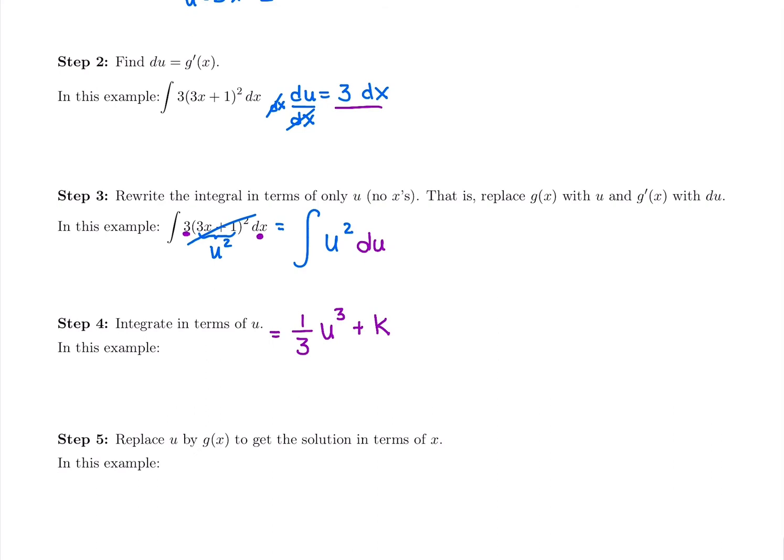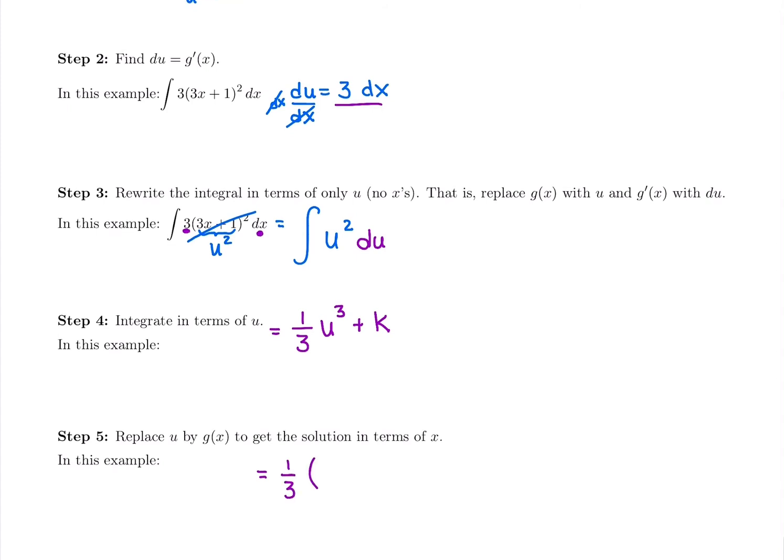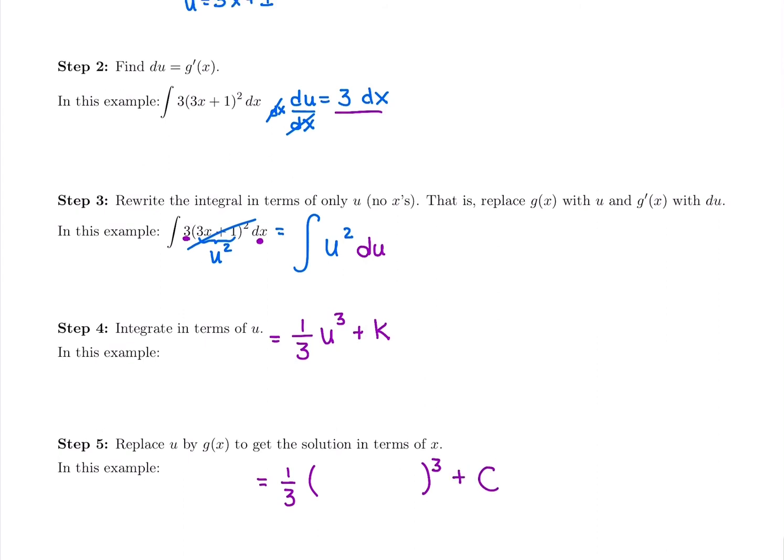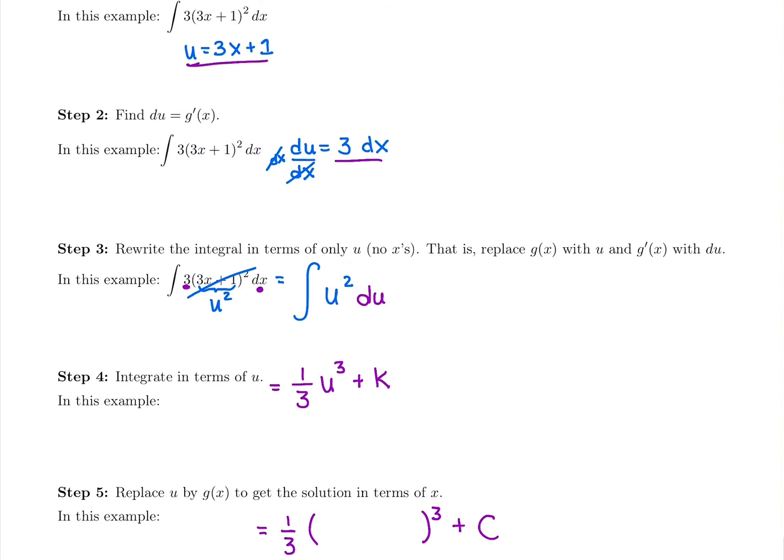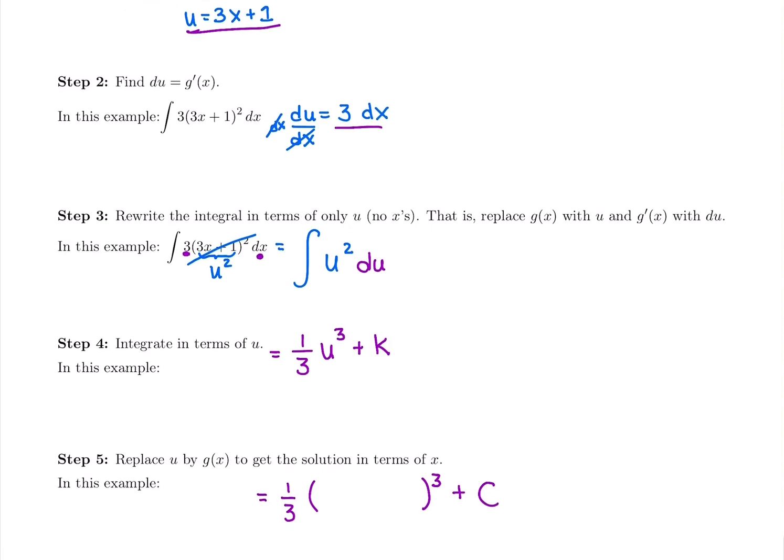My last step is the question was in terms of x, so the answer should be in terms of x. We are going to write 1/3 and I'm going to sub back in for what we called u, still raise it to the 3, and we're going to be back in x, so I'm going to write plus c. I just need to look back at what u was. u was (3x + 1)³.